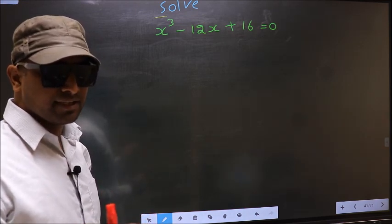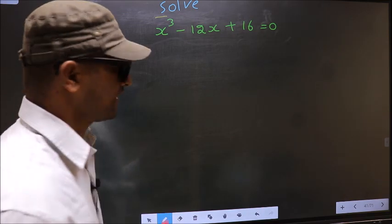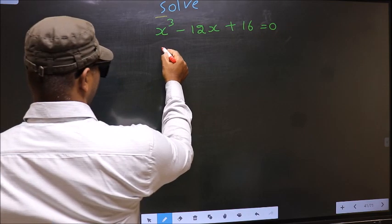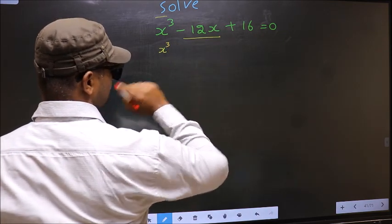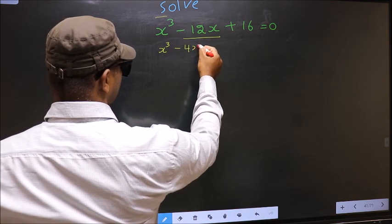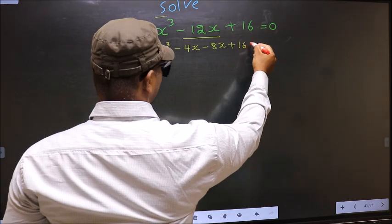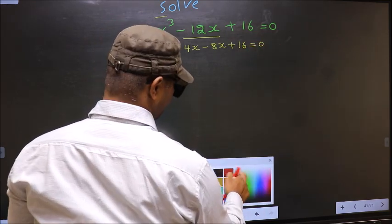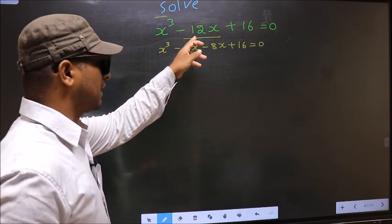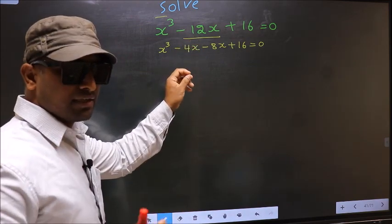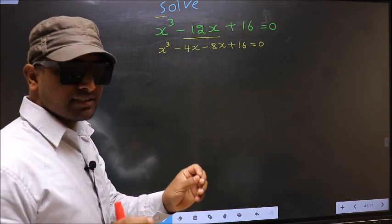For that, we have to change the x term. In place of minus 12x, I write minus 4x minus 8x plus 16 equal to 0. In place of minus 12x, I have written minus 4x minus 8x.